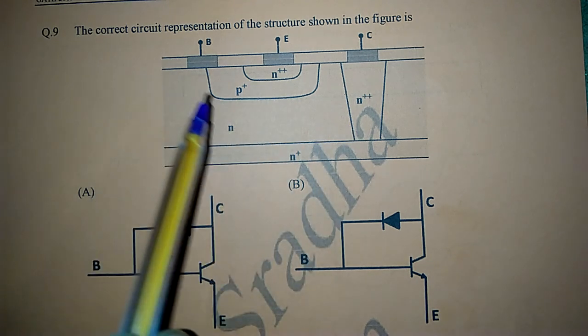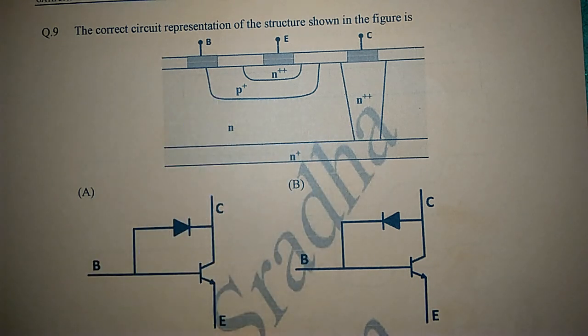So we can say that there is an NPN transistor. From the options we can say that option C and option D are wrong options.